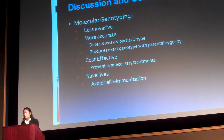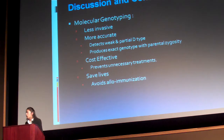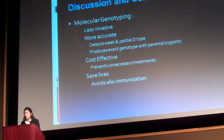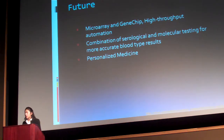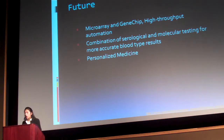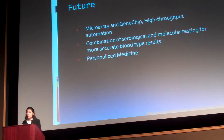Molecular genotyping is also cost effective, as it reduces unnecessary treatments — for example, the 40% of pregnant women who currently receive unnecessary treatment for hemolytic disease of the newborn. Molecular genotyping can ultimately save lives by avoiding alloimmunization through more accurate blood type matching. In the future, I propose using technologies such as microarrays and GeneChip to improve the automation of molecular analysis, reduce costs, and produce samples at a mass level. By combining this method with serologic typing, we can find a more comprehensive blood type match and push toward the goal of personalized, pain-free medicine.